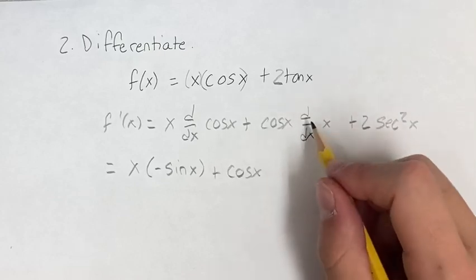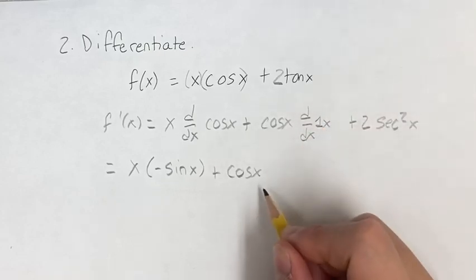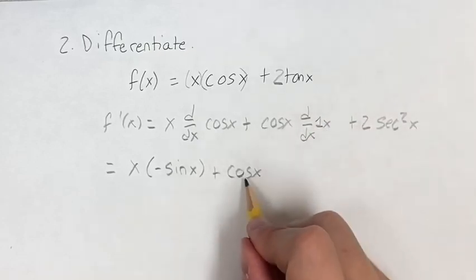It's a linear term, so its derivative is its coefficient, which is just 1. So cosine x times 1 is just 1.